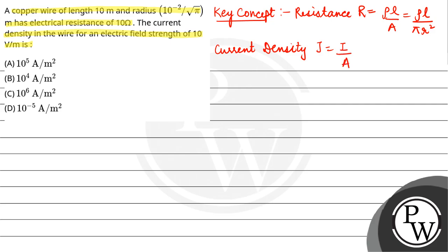So in the question, length given is 10 meter, radius R is 10 to the power minus 2 upon under root pi meter, electrical resistance given is 10 ohm, and electric field given is 10 volt per meter.